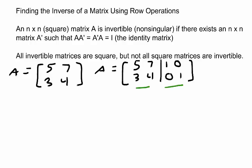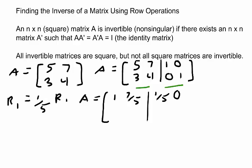For our first row operation, let's let row 1 be rewritten as 1/5 row 1. So then we have A equals 1, 7/5, 1/5, and 0.